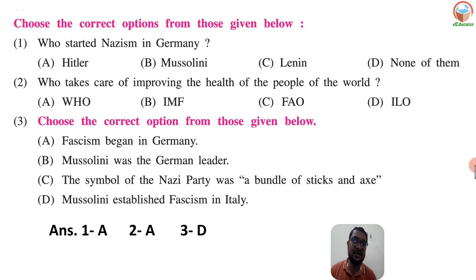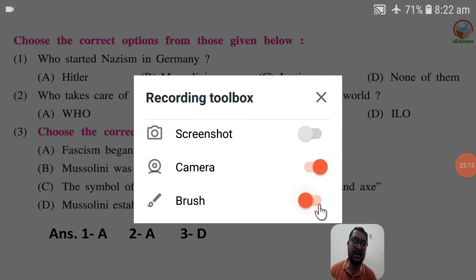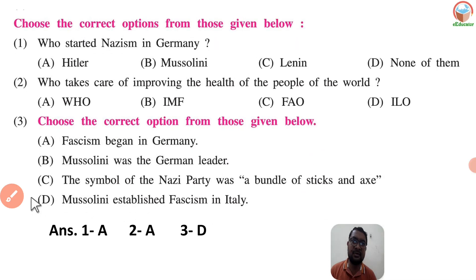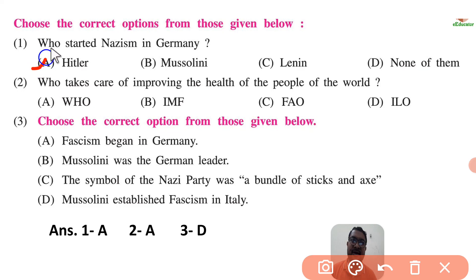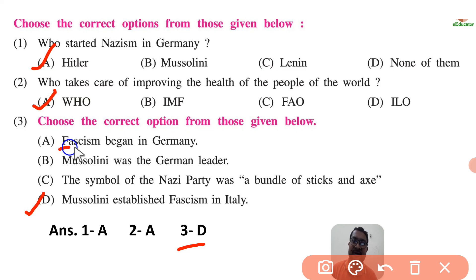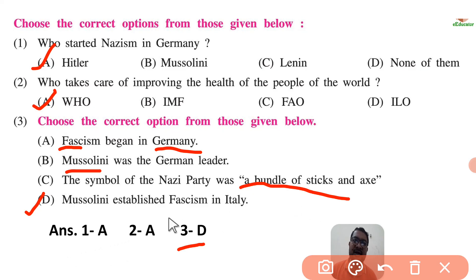For the MCQ section, the correct answer for who started Nazism in Germany is Hitler. The organization that improves health of people is the World Health Organization. For the choose-the-correct-option question, the fourth statement is wrong. Fascism began in Italy, not Germany. Germany started Nazism. Mussolini was the Italian dictator, not the German dictator. The correct options are A and D.